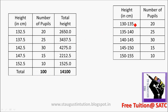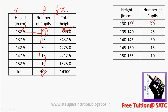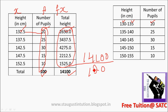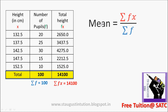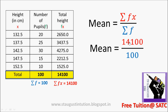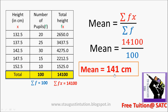We will add the frequency column — sigma f. We will add the fx column — sigma fx. Now we compute sigma fx divided by sigma f. So the answer is 141 cm.